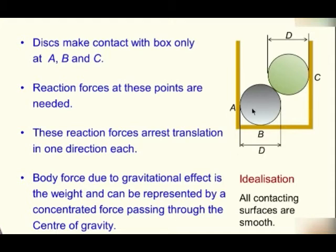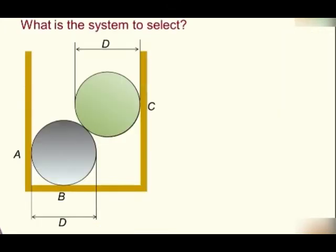And you can recognize that it has a translation in one direction. The problem statement also gives what are the weights of this disk that act like a body force. And where does the body force act? It acts through the centroid of the disks. Now, the next question is, what is the system to select?